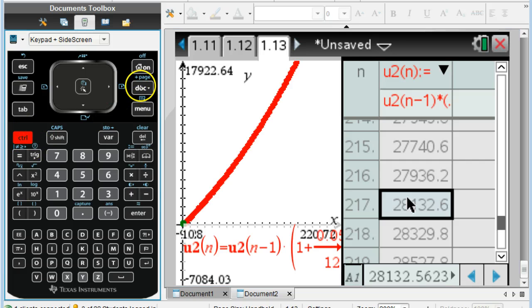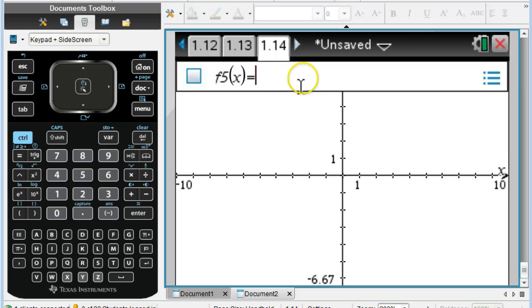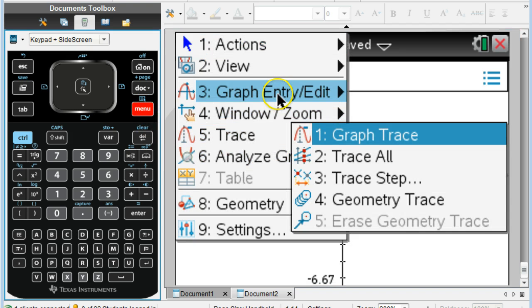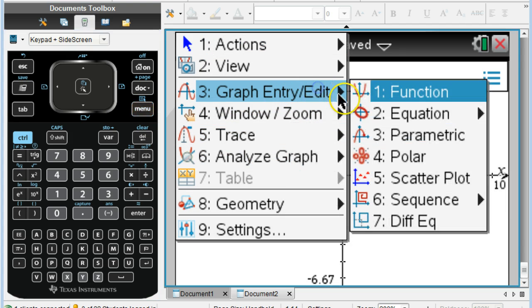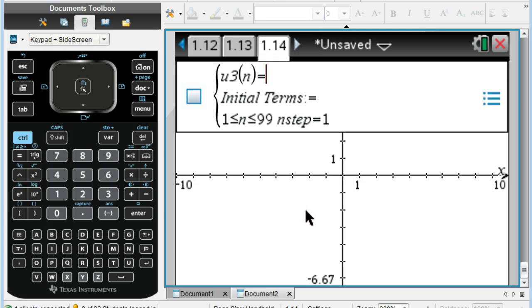I'll try a new page here. I want to do graphs again. And so with the graphs, this function is not what I want. So I want to go menu, graph entry, and I want to do sequence again. So here's another sequence. And this one, hopefully I don't go over 99. I don't know if that matters or not. I'm going to enter in the equation.